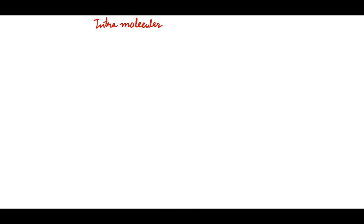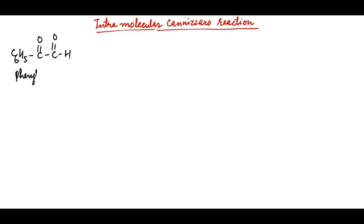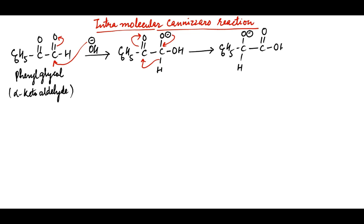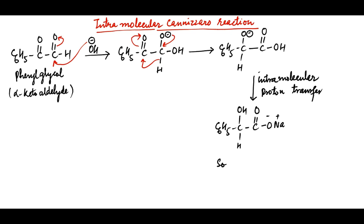Dialdehydes and alpha-ketoaldehydes undergo intramolecular Cannizzaro reaction, giving various valuable products. Consider for example phenylglyoxal, which is an alpha-ketoaldehyde. The hydroxide anion will preferentially add to the more electrophilic aldehyde than to the keto group. This forms a hydroxyalkoxide, in which intramolecular hydride ion transfer to the keto group changes it to an alkoxide. This then undergoes intramolecular proton transfer from the acid to the alkoxide to form the sodium salt of mandelic acid.